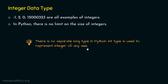We know that minus one, two, zero, one, five, triple zero, three, two, three are all examples of decimal integers, to be precise. Other than decimal integers, we can represent non-decimal integers as well in Python. Let's try to understand how to represent non-decimal integers in Python.